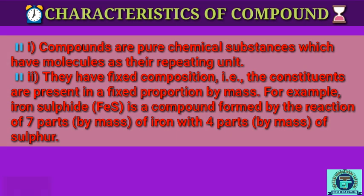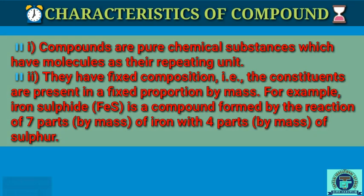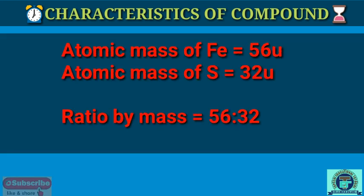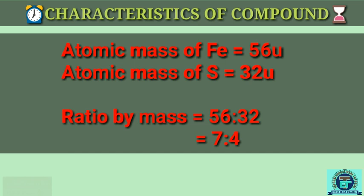The characteristics of compounds: first, compounds are pure chemical substances which have molecules as their repeating units. Second, they have fixed composition — the constituents are present in a fixed proportion by mass. For example, iron sulfide is a compound formed by the reaction of 7 parts by mass of iron with 4 parts by mass of sulfur. The atomic mass of iron is 56 u and sulfur is 32 u, giving a ratio of 56:32 = 7:4.